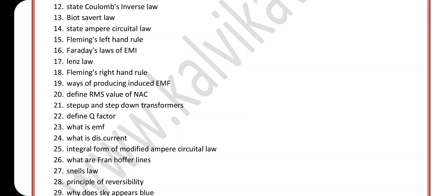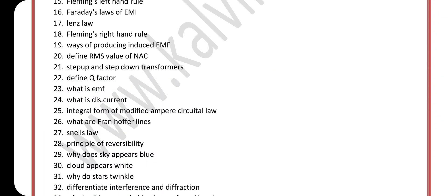Question 24, what is DC current? Question 25, integral form of modified Ampere circuit law. Question 26, what are Fraunhofer lines? Question 27, Snell's law. Question 28, principle of reversibility. Question 29, why does sky appear blue? This is a very important question.